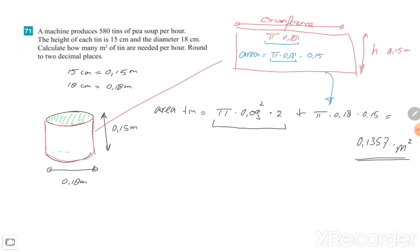But that's just one tin. But the machine produced 580 tins. So the total square meters, we needed that answer 0.1357, not rounded, multiplied with 580. So what I do is to leave that answer in my calculation and then just multiply with 580.